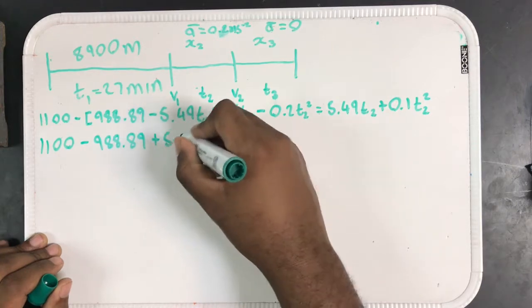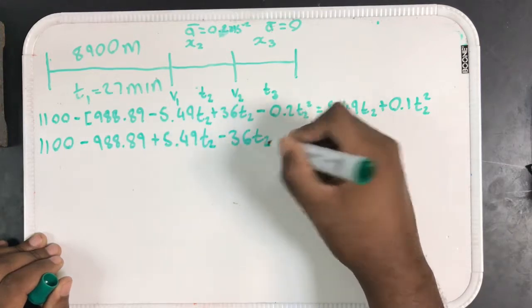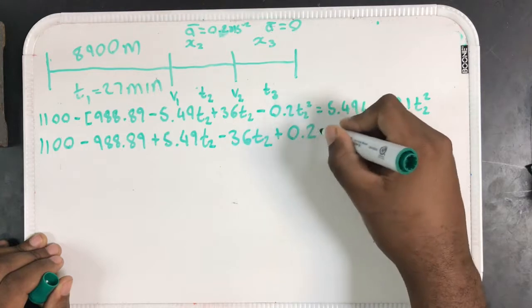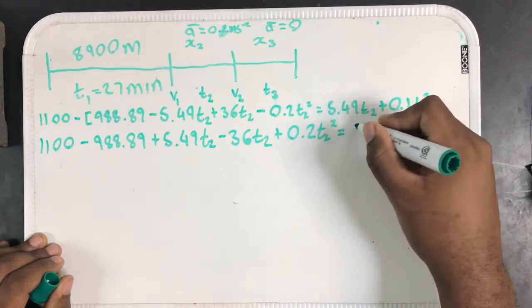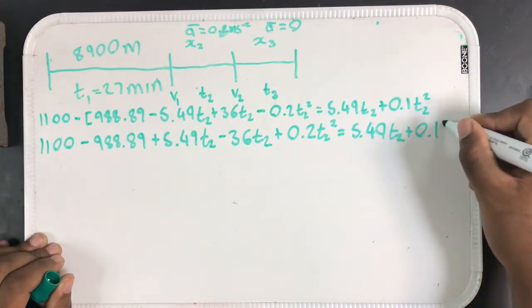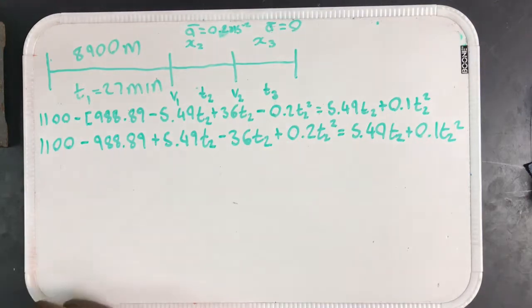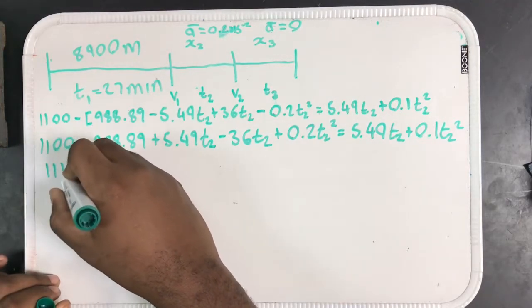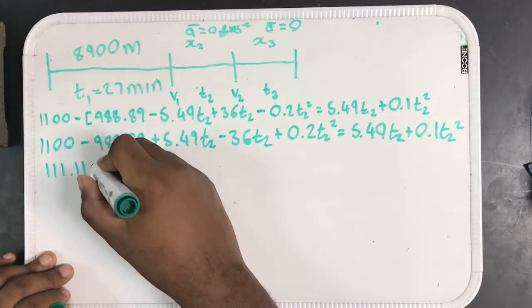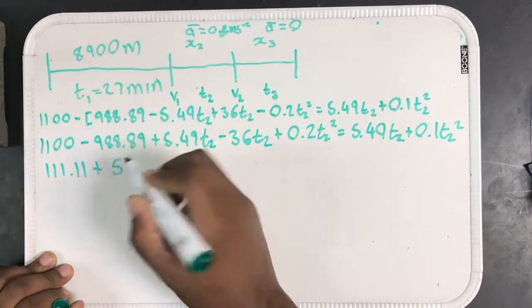Plus 5.49 T2, minus 36 T2, plus 0.2 T2 squared, equals 5.49 T2 plus 0.2 T2 squared. Now, as I bring all the like variables to one side, I'm going to work this out. That's 1100 minus 988.89, this gives us 111.11. Again, I'm not going to simplify this, I'm going to leave that exactly as it is, and you'll see why in a short moment.